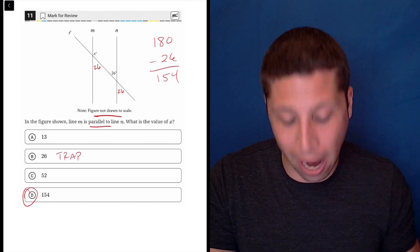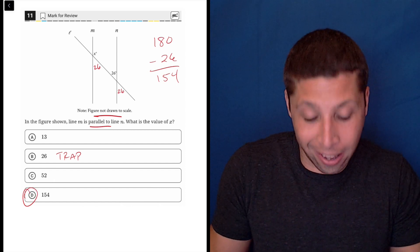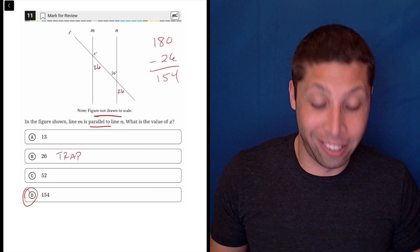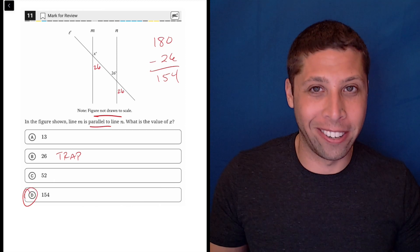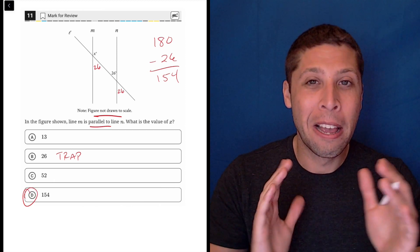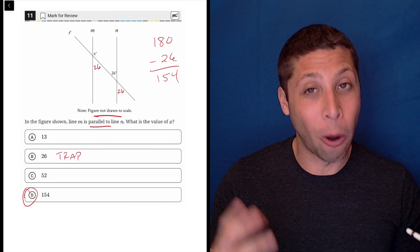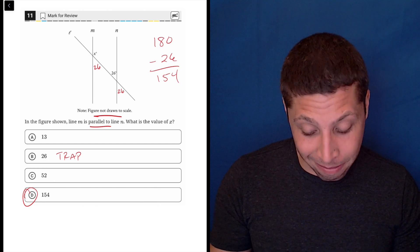Maybe that makes choice B the trap, because it's the same measurement. But I hope you can see, even though it's not drawn to scale, the X is clearly a different angle than the 26. It might not be exactly 26 degrees that we're looking at, but we should still be able to see the relationships between angles. Hopefully you can see that B would be wrong.